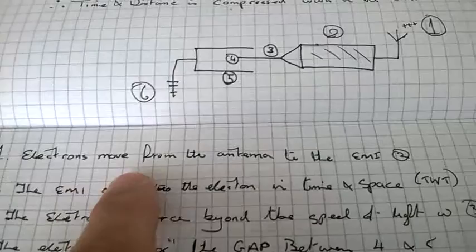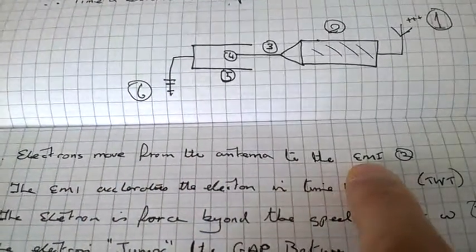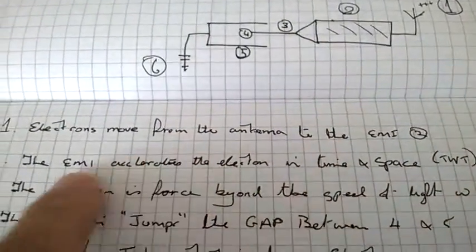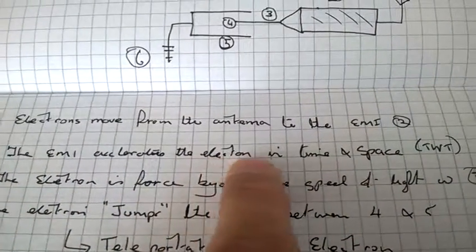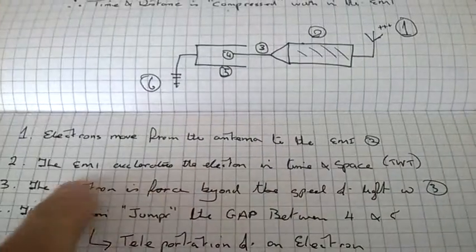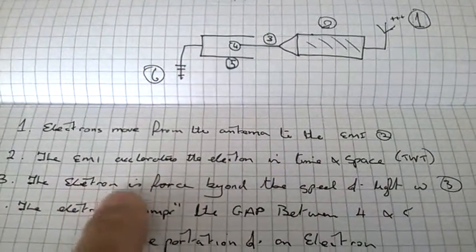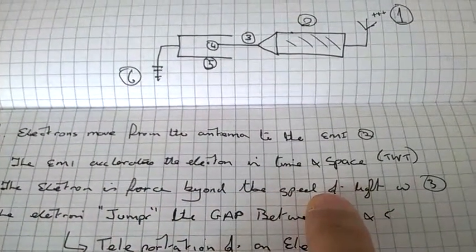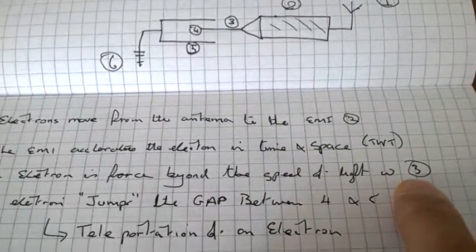Electrons move from the antenna to the EMI, as shown as number two. The EMI accelerates the electron in time and space, a travelling wave tube. The electron is forced beyond the speed of light, as shown at position three.